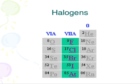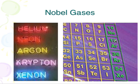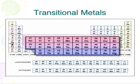Then we have the last group, group 18. Group 18 elements are the least reactive — very rarely will you find them combined in any compound. They're very snooty, like royalty; they don't want to deal with anything else. We call them the noble gases. So to summarize: group one is the alkali metals, group two is the alkaline earth metals, groups three through 12 are the transitional metals, group 17 is the halogens, and group 18 is the noble gases.